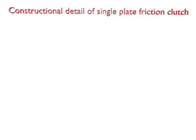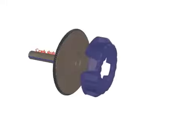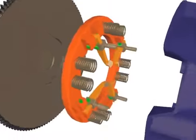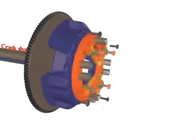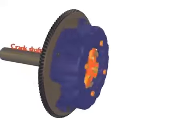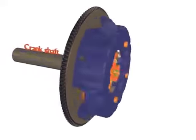Constructional Detail of Single Plate Friction Clutch — it has three main parts. Number 1: Driving Members. There are two driving members: the clutch cover assembly and the flywheel. The clutch cover assembly consists of a cover which carries the cast iron pressure plate, the pressure spring, and the release lever.